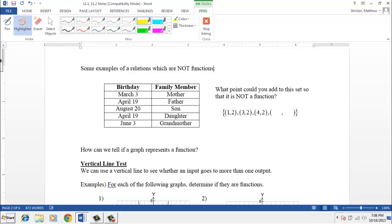Which birthday date has two different output values? Well, hopefully you noticed that it's April 19th. Because on April 19th, that's the birthday, has an output of father and of daughter, that's different, they're different output values. So we have the same input value that has two different output values, that makes this not a function.